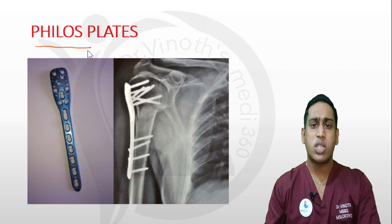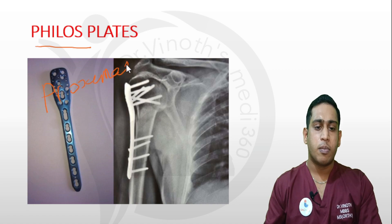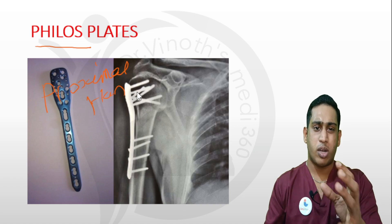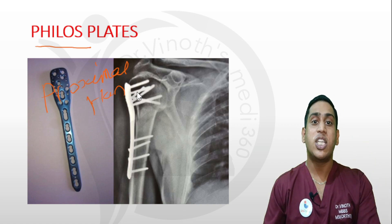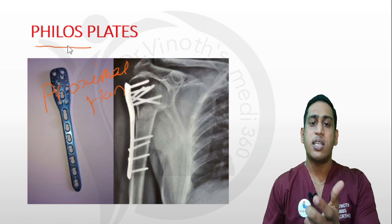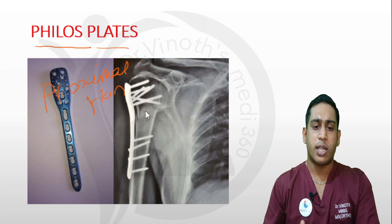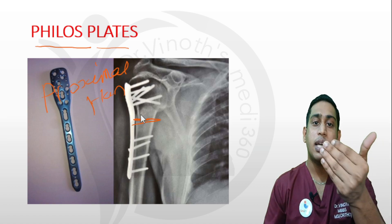Now coming to region-specific plates: the PHILOS plate — Proximal Humerus Interlocking System. 'PHILOS' stands for Proximal Humerus Interlocking, referring to locking between the bone and screws as well as between the screw head and the plate. It is a locking type of plate used for surgical neck of humerus fractures or proximal shaft fractures of the humerus, and is available in multiple lengths based on the fracture site.